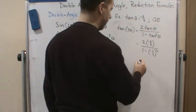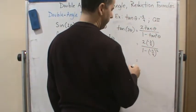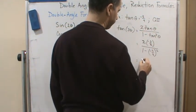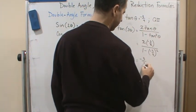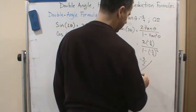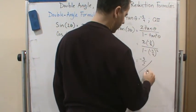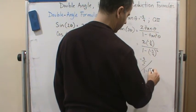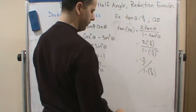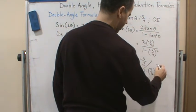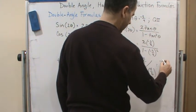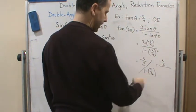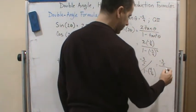And so if we just simplify this, we get... Well, here, this is going to cancel with the four. So we get negative three-halves. And that's going to be divided by... Now, this is going to be one minus nine-sixteenths. Which then gives us negative three-halves divided by... Well, one minus nine-sixteenths is going to be seven-sixteenths.